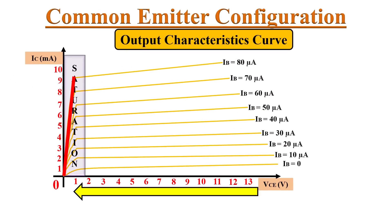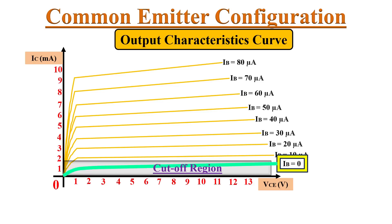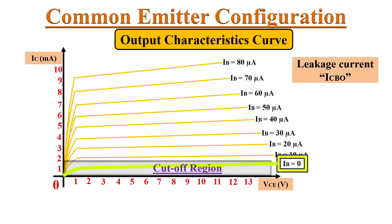The third region of operation is the cutoff region. Whenever base current IB equals zero, the BJT operates in the cutoff region. However, the collector current IC is not zero — in fact its value is relatively large. This collector current exists because of the leakage current ICBO. From the graph we can see that whenever IB equals zero, the leakage current ICBO is significant.